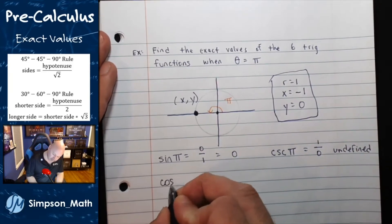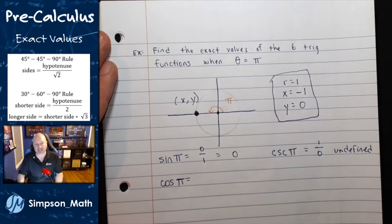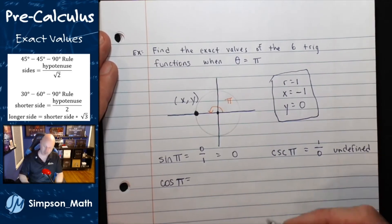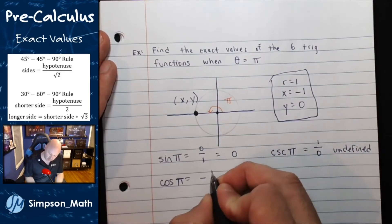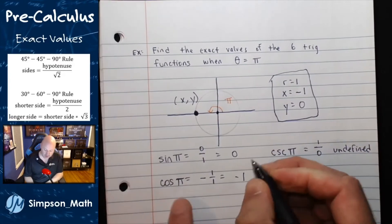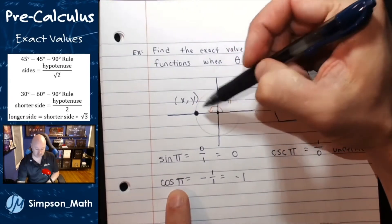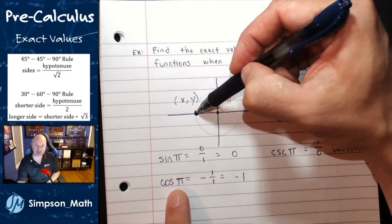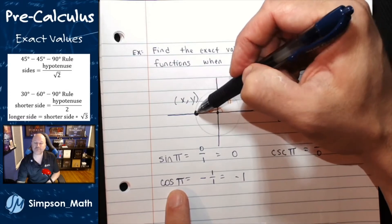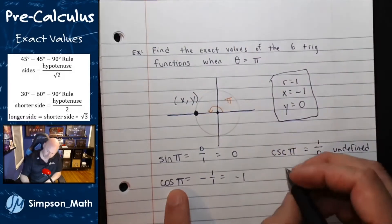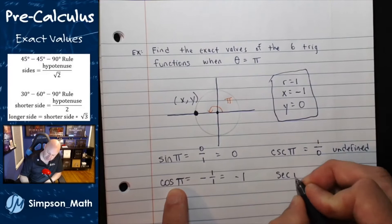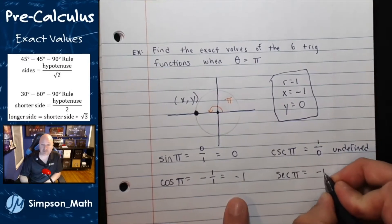All right, moving on. Cosine of pi. Well, that's the x value over the radius. So we're talking about a negative 1 over 1, or just negative 1. Cosine of pi is this x value, which is negative 1. Secant, the reciprocal. Well, the reciprocal of negative 1 is negative 1.